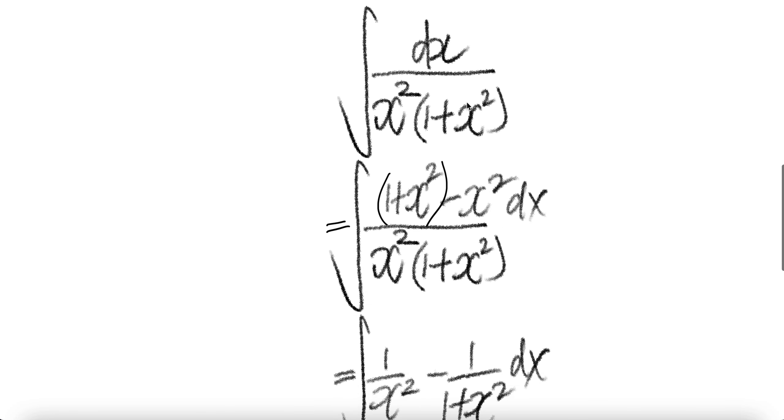Write the 1 here in terms of a combination of this. Write 1 plus x squared minus x squared. X squared minus x squared, you get 1. So 1, which is this.